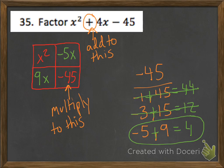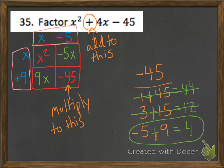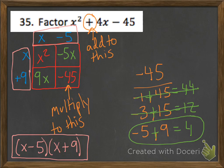I'm going to plug those into the two boxes. Notice my middle term is a positive 4x, so I need not just a 9 and a negative 5, but a 9x and a negative 5x. Now I can do the actual factoring. x squared can only be x times x. What times x gives me negative 5x? Negative 5. What times x gives me 9x? Positive 9. So my two factors are x minus 5 and x plus 9. Our answer is x minus 5 times x plus 9.